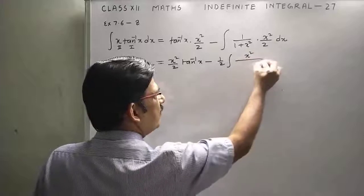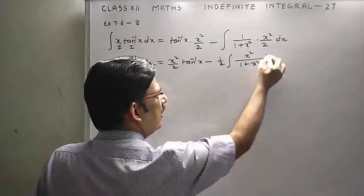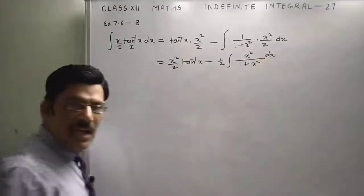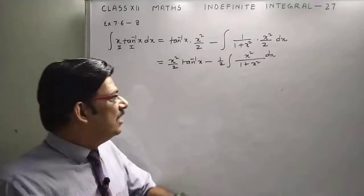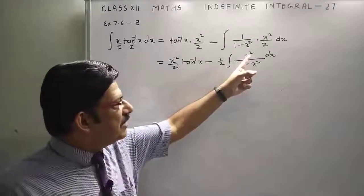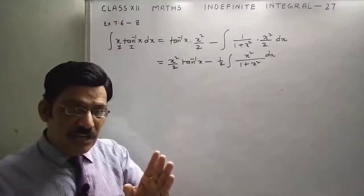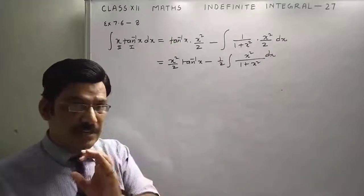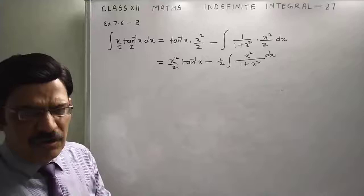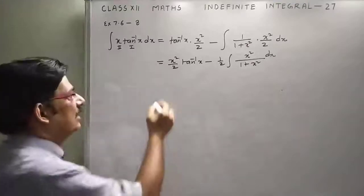Then we get X square upon 1 plus X square DX. And I have told you earlier in starting videos that whenever we have degree of numerator is greater than or equal to degree of denominator, then we have to divide or split into two parts.